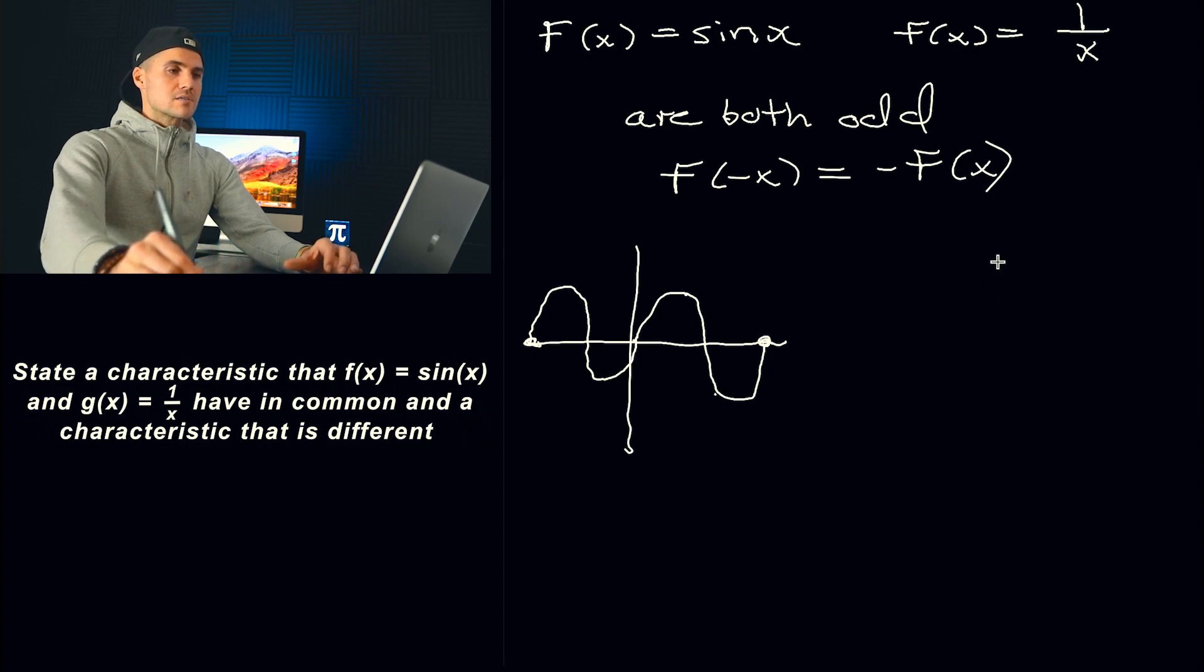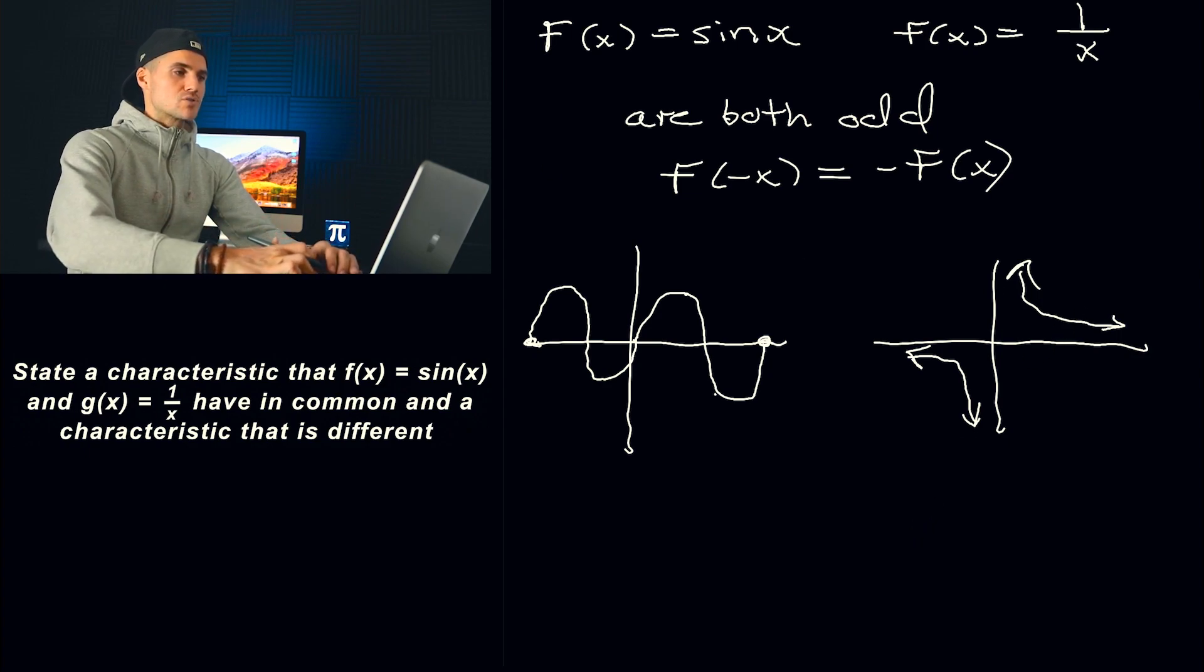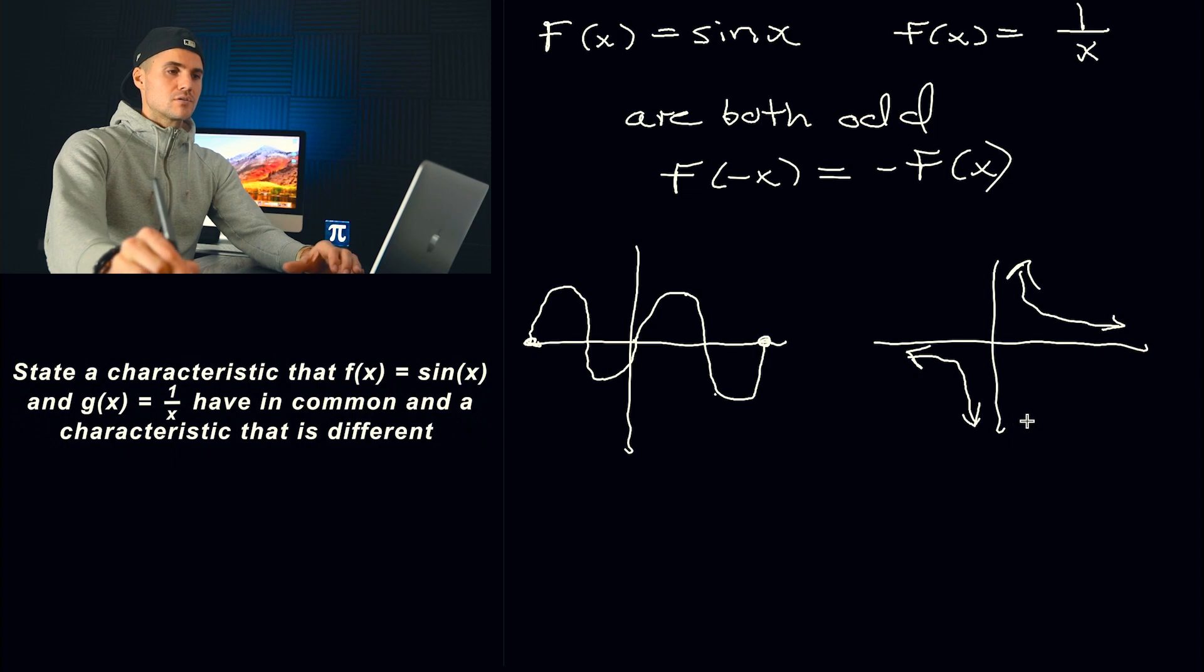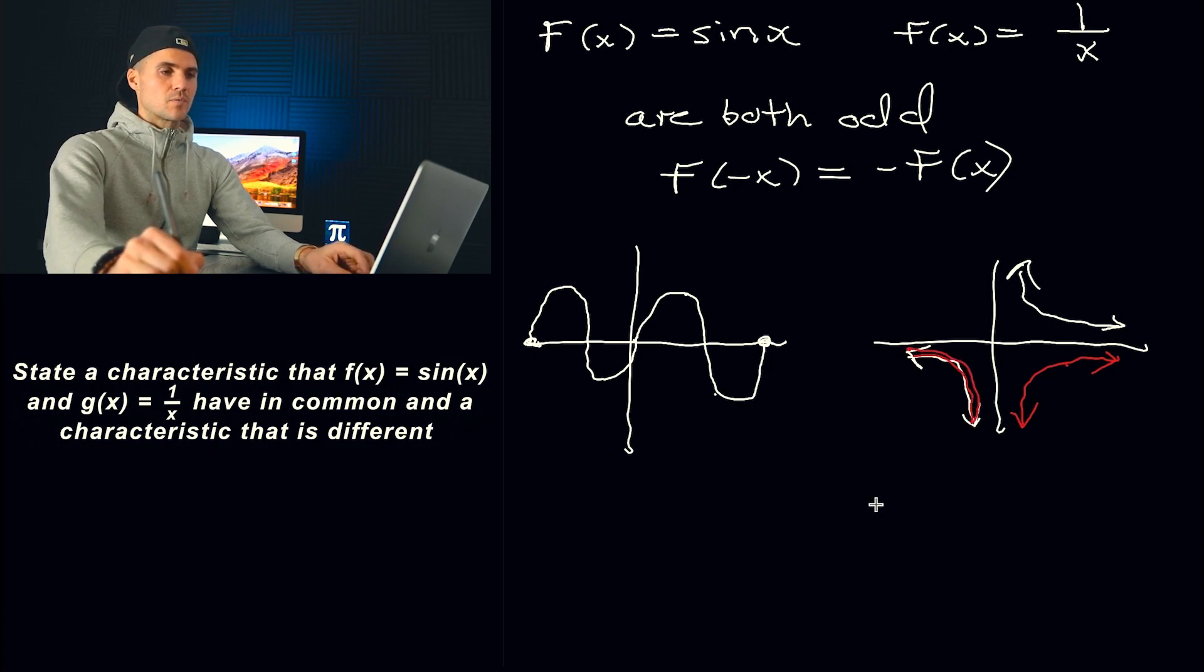Now 1 over x, the way that that looks like, is it's basically like this. That is 1 over x. Same thing. If I were to take this half of the function, reflect it in the x-axis, it will look like that. Then I got to reflect it in the y-axis, I would end up with this piece right here. So odd function, graphically, if you reflect one half of the graph over the x and the y-axis, you got to reflect over both, you would get the other half.